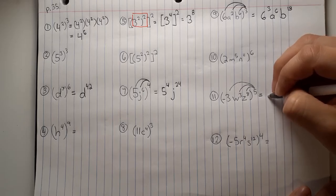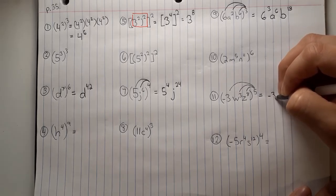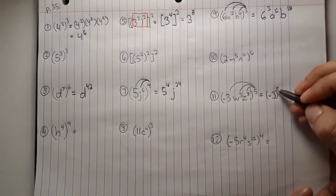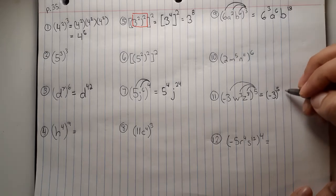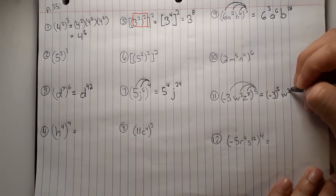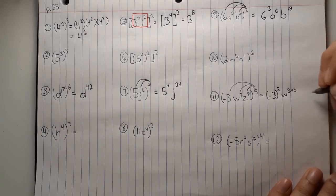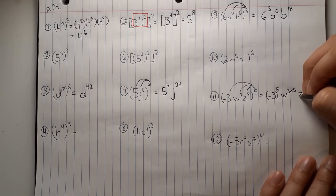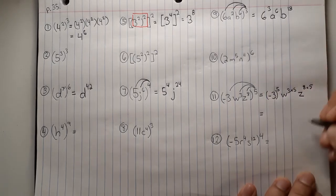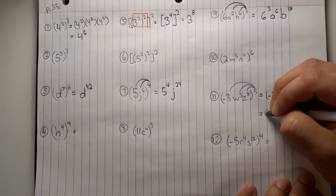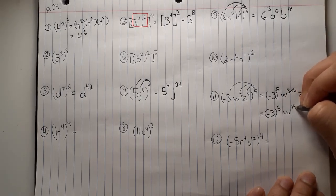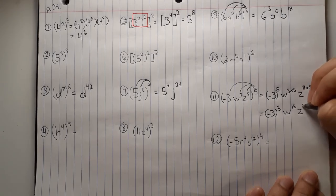So we end up with negative 3. I'm going to put that in parentheses because the negative does need to also get hit with that 5. So we end up with negative 3 times w to the 5th times w to the 15th and z to the 40th.